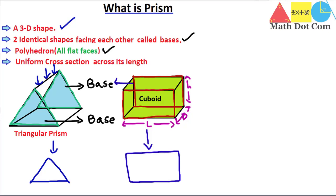So we can say that a cuboid is a prism. This is one base and this is another base of the cuboid. You can also call it a rectangular prism, named on the basis of the shape of its base.